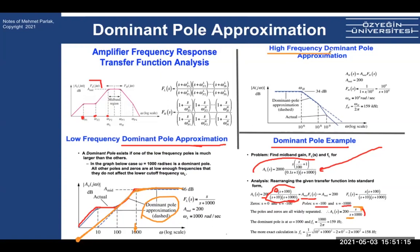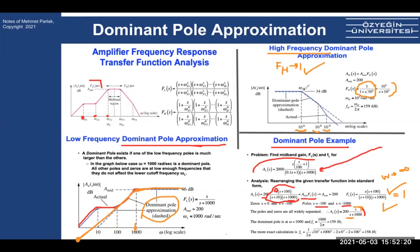Similarly, for the high-frequency dominant pole approximation, if one pole is much smaller than the others, we represent F_H with just that one pole. Testing: when S → 0, the expression goes to 1; when S → ∞, it also behaves correctly. Using the dominant pole approximation, ω_H = 10⁶ rad/s. Dividing by 2π gives 159 kHz. Similarly for the low-frequency dominant pole, ω_L = 1000 rad/s gives 159 Hz.